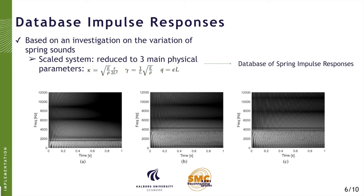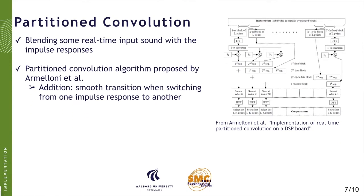We therefore decided to calculate the response of different springs offline and generate a database of impulse responses. We varied the spring parameters to get impulse responses with different audio qualities. We kept kappa constant and varied the curvature parameter q, which governs the transition frequency at which the spring changes its dispersion characteristics — you can see these two dispersion zones in the spectrogram below. We also varied the wave speed parameter gamma, which governs the density of the echoes in the impulse response. This resulted in a total of 54 impulse responses.